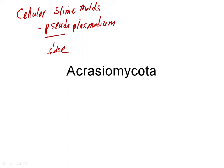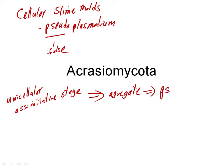The main assimilative stage of these organisms are amoebae, and they are going to aggregate, that is they're going to come together to form a pseudoplasmodium. Like the amoebae we just saw in the myxomycota, but now they're going to come together and not fuse. They're going to come together and kind of stick together in a multicellular mass.